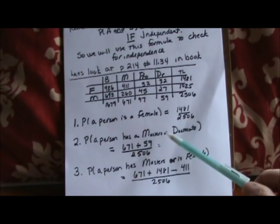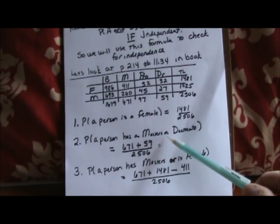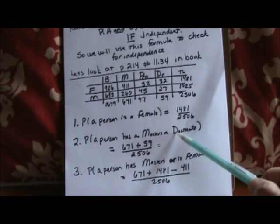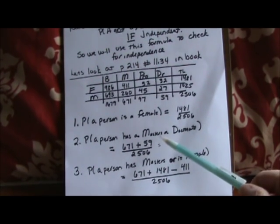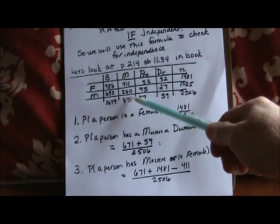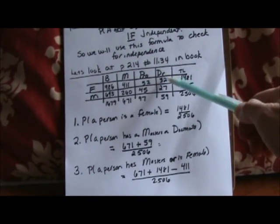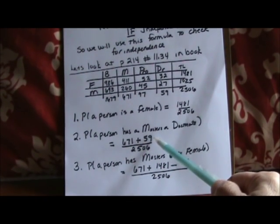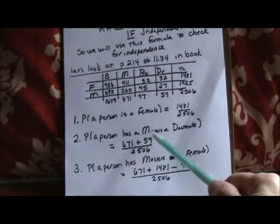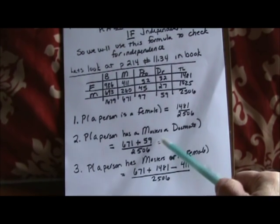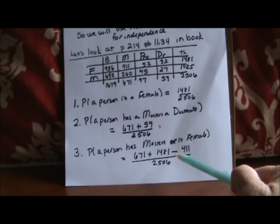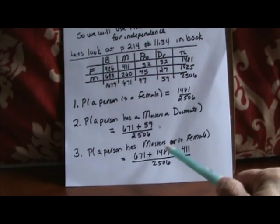How about the probability a person has a master's or a doctorate? We have two different things happening — this is essentially our addition rule — but there's no intersection between master's and doctorate; you either have one or the other. So I'm just going to add the two: master's is 671, doctorate is 59, so 671 plus 59 divided by the grand total. Go ahead and calculate that decimal.